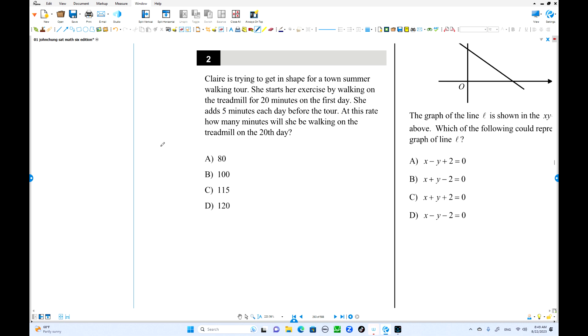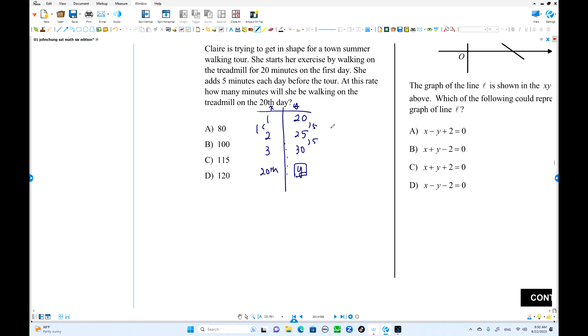Number 2. Claire's trying to get in shape for a summer walking tour. So she starts her exercise by walking on the treadmill for 20 minutes the first day. And the second day, 5 minutes more. The next day is about 25, something like this one. Maybe third day is about 30. So we have a 20th day. So what is this value of y? You can make a table here. You can use this as x, this as y. How can you find this one? You can use, because this is increased by 5, so that is linear. So between any two points, right, the constant slope. The slope is about 5 over 1 here. Slope is 5.